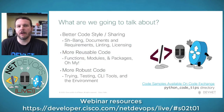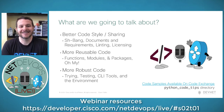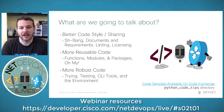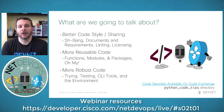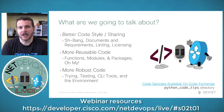Our topics for today are broken up into different pieces. We're going to start with better coding and style related to sharing code with other developers, touching on topics like the shebang line, doc strings, linting and code style, as well as a little bit on licensing. We'll then move into making our code more reusable with functions, modules, and packages, and touch on objects as well.